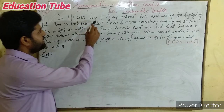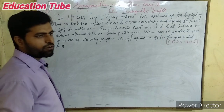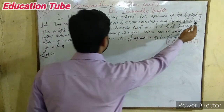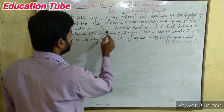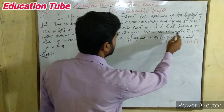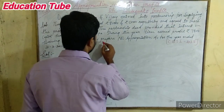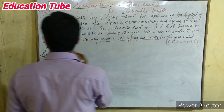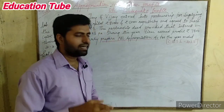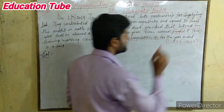On 1st April 2019, Jay and Vijay entered into partnership for supplying laboratory equipment. They contributed capital of Rs. 80,000 and Rs. 50,000 respectively and agreed to share the profit in ratio 3:2. The partnership deed provided that interest on capital is allowed at 9% per annum. The firm earned a profit of Rs. 7,800. Prepare the Appropriation account for the year ending 31st March 2019.